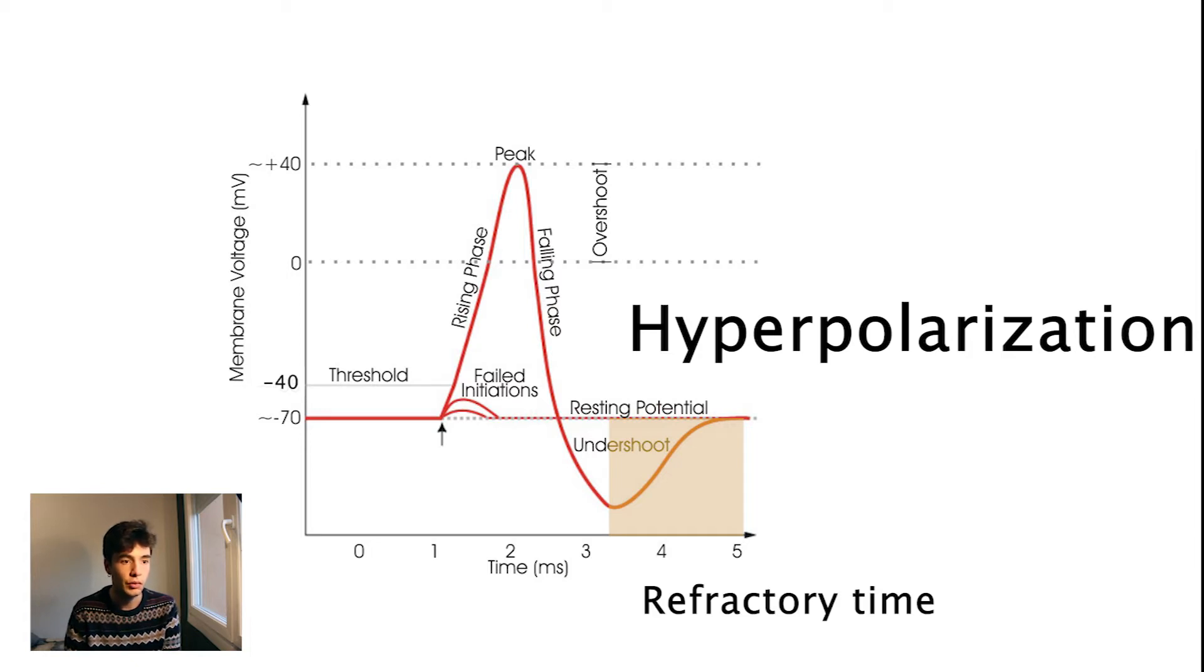The period of time that it takes the neuron to go back to the resting potential is called the refractory time, and it is usually measured with a symbol tau.